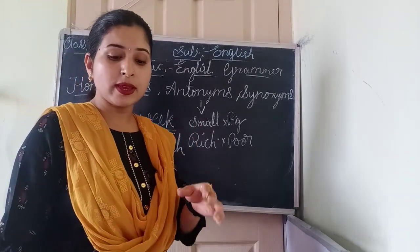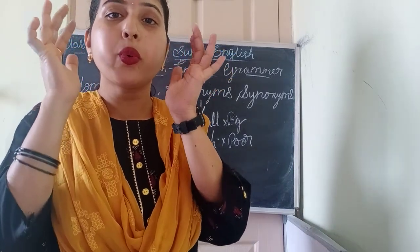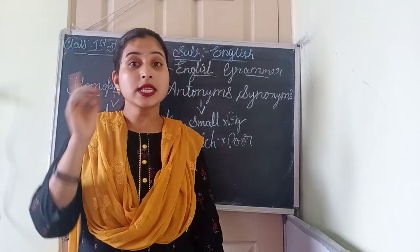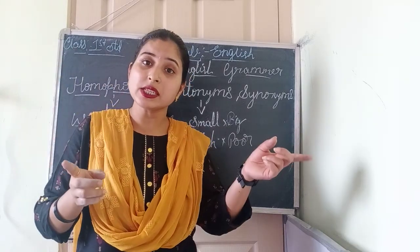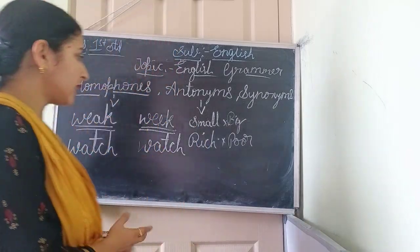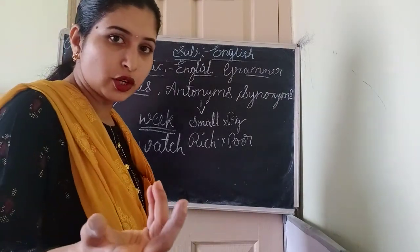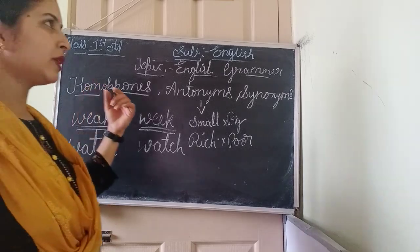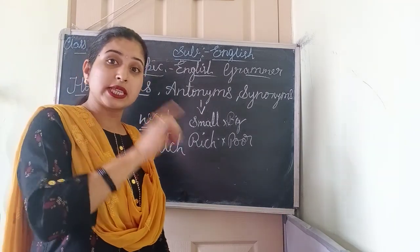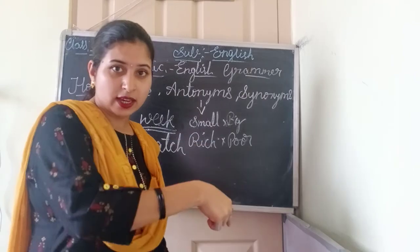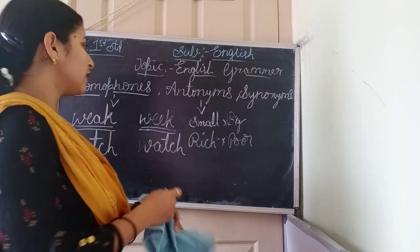More examples of homophones: 'blue' — the color blue — and 'blew' as in blowing the balloon. Then 'sun' — the sun rises in the east — and 'son' meaning a male child. Also 'sea' — S-E-A, the ocean — and 'see' — C-E-E, meaning to look. These are a few more examples of homophones.